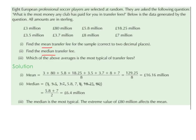Since we only have eight values, we can work our way in from the left and right, crossing off the smallest and largest values as we go. We cross off 3, then 80, then 3.5, then 18.25, then 3.7, then 8. We are left with two middle numbers: 5.8 and 7. When we have two middle numbers, we add them together and divide by 2, so 5.8 plus 7 divided by 2 gives us 6.4 million pounds. The median is 6.4 million pounds.